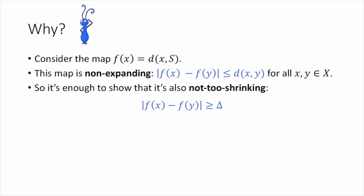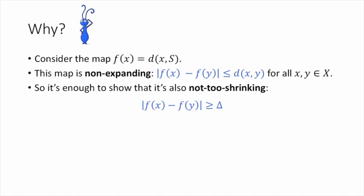So now that we know that f is not expanding in this sense, then to show that this embedding works sort of intuitively, we need to show that it's also, at least probably, not too shrinking. Meaning that f(x) minus f(y) is bigger than or equal to some appropriate delta. If this is true sort of most of the time for enough of the S's for appropriate values of delta, then a decent number of coordinates of this embedding are going to be contributing something that's pretty close to the actual distance. And that will mean that the embedding has low distortion. So intuitively, what we want to show is that this map f, at least for a random S, is probably not too shrinking. So this leads us to the question, when is that map not too shrinking?